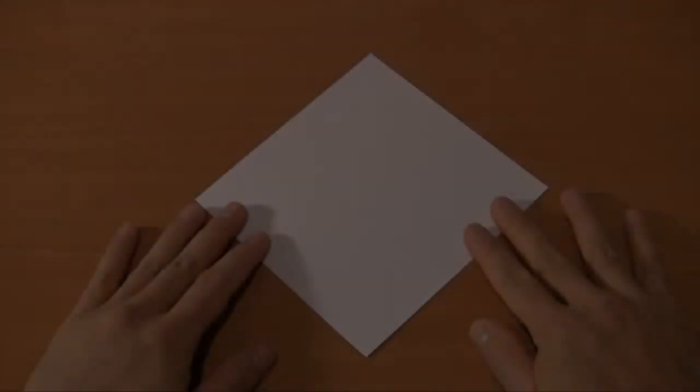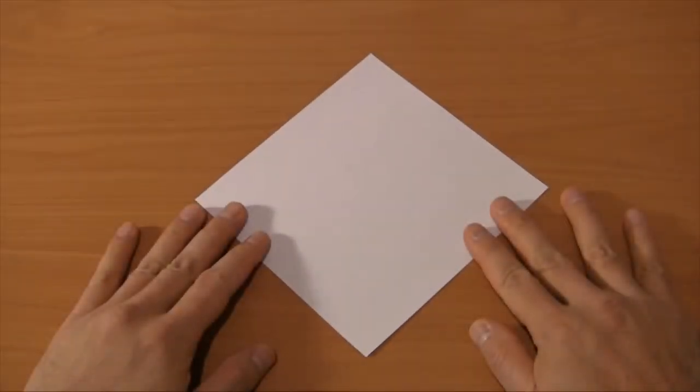So you're going to want a square piece of paper. You want to color one side so that you have color on one side and the other. Just get some crayons and color it.